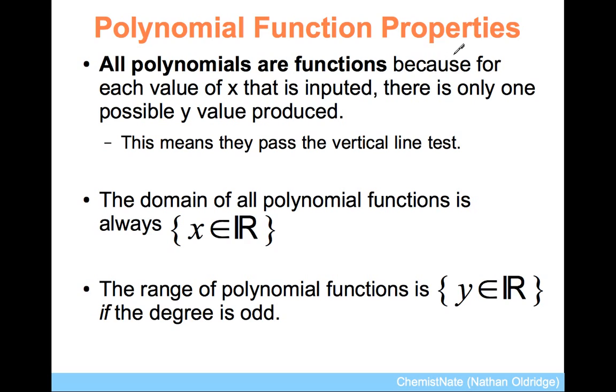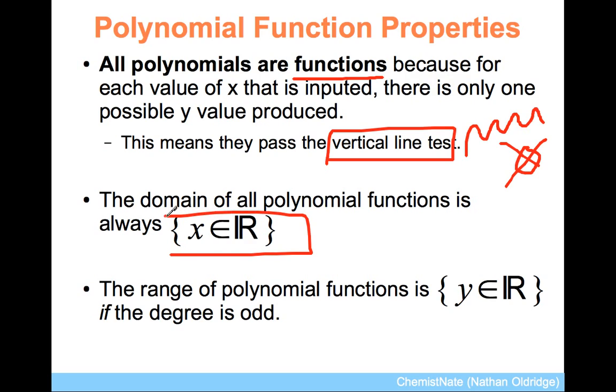A few of the properties you're going to have to know include the fact that they are functions, which means they pass the vertical line test. They don't loop back on themselves. What you might remember is that a function is continuous, and it does not loop back on itself the same way a circle does. A circle is not a function. Polynomials are. The domain of a polynomial function will always be x element of R, because you can plug in any value of x you want, and you'll get a value of y out.